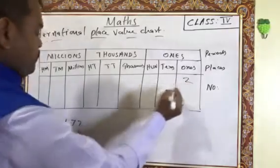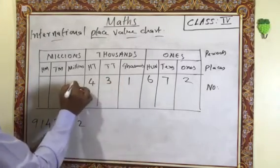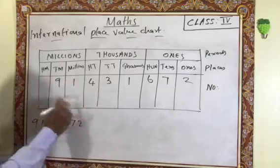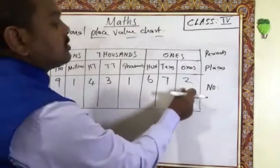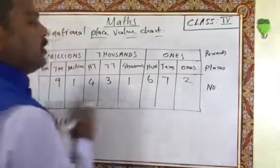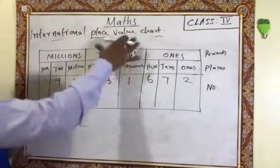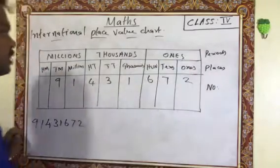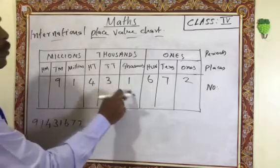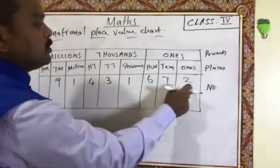Write from right side to left side: 2, 7, 6, 1, 3, 4, 1, 9. If you write from left side to right side, you will start from here and the last column will be empty — that is wrong. That's why you write from right side to left side. Now read: first read the Millions column — 91, then Thousands — 431, then Ones — 672. So the number is 91,431,672.